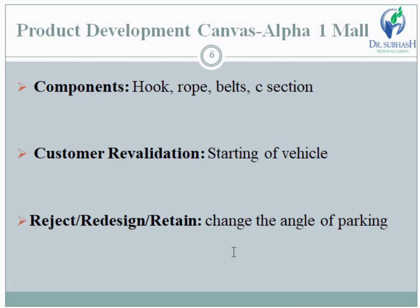Customer revalidation: the design of the Alpha Mall can be scheduled or changed based on customer revalidation. Some customers give feedback for vehicle parking, so we can change the Alpha Mall based on that customer revalidation — reject, redesign, and retain. For example, changing the angle of parking. The same feedback is applied in parking management, such that the first parking will be for bicycles and then next parking will be for cars. This is one type of rejection or redesign in the Product Development Canvas.